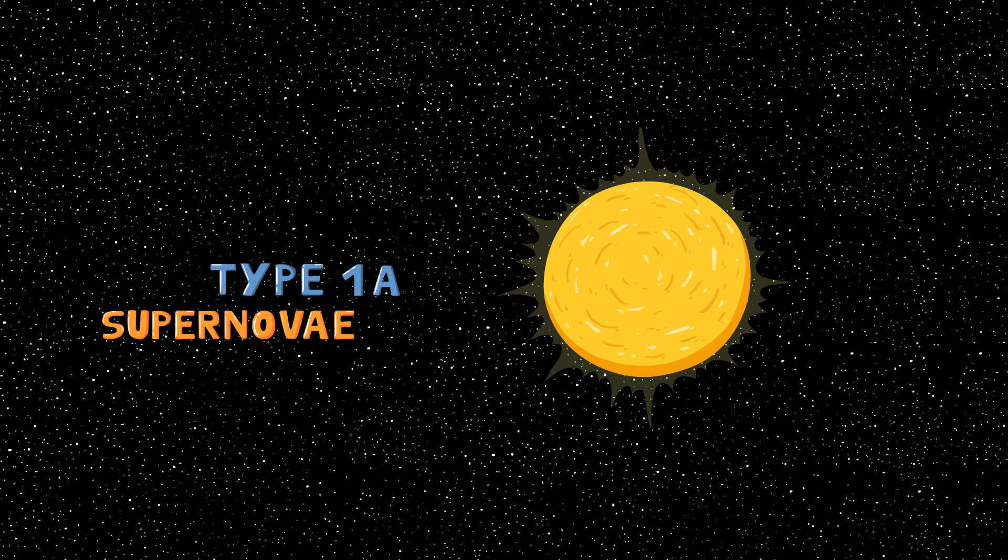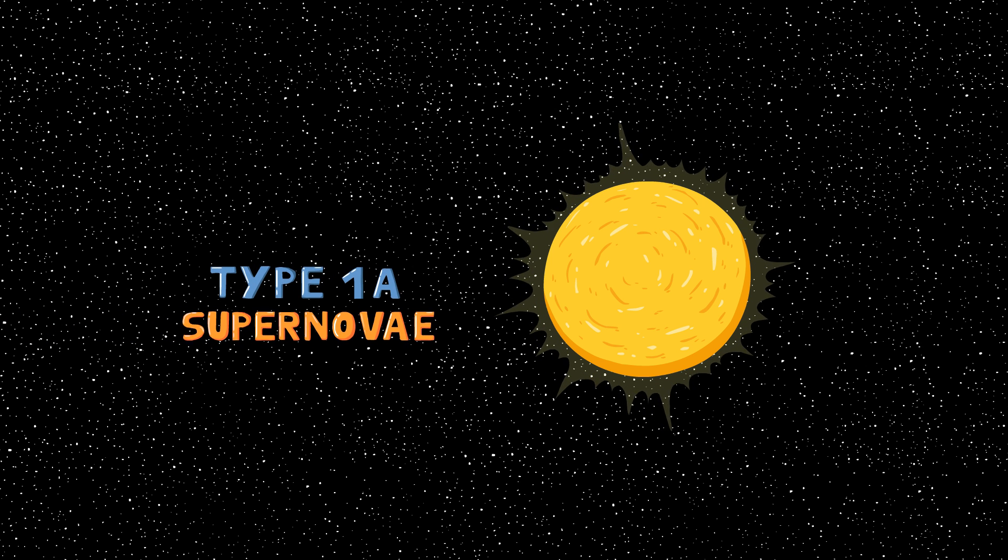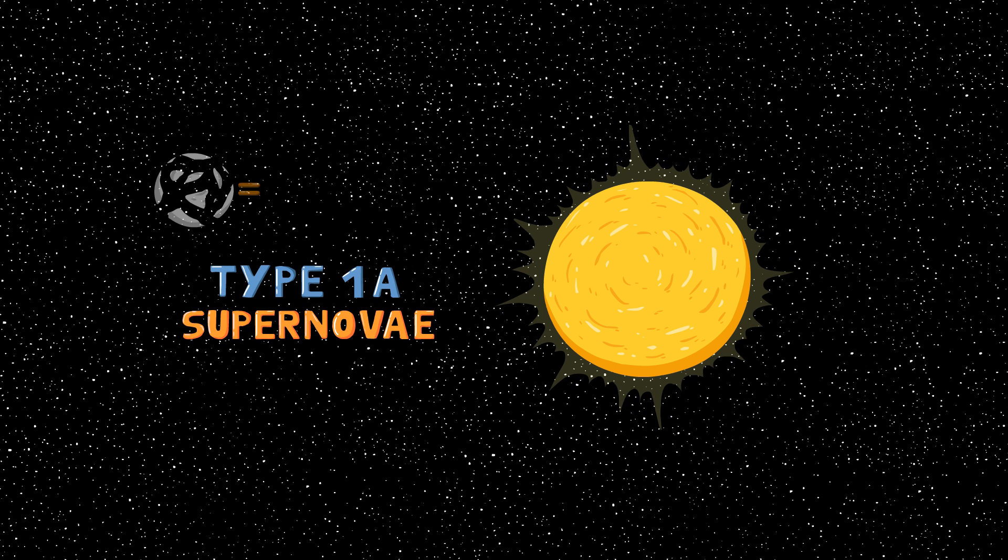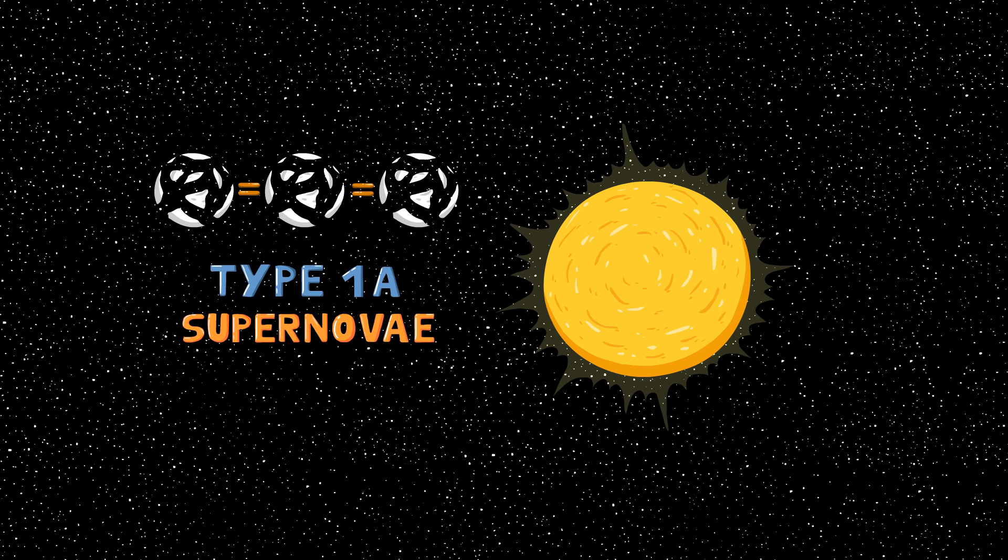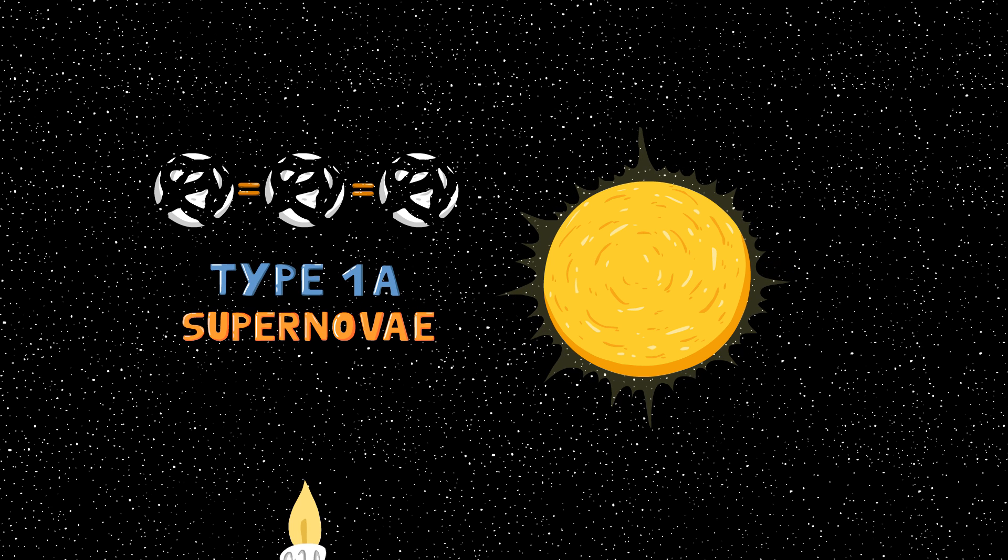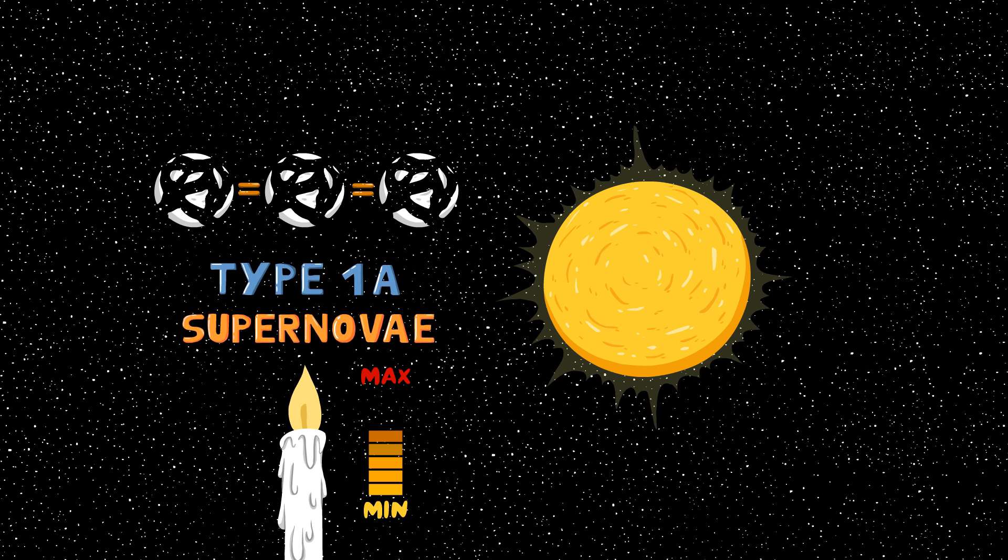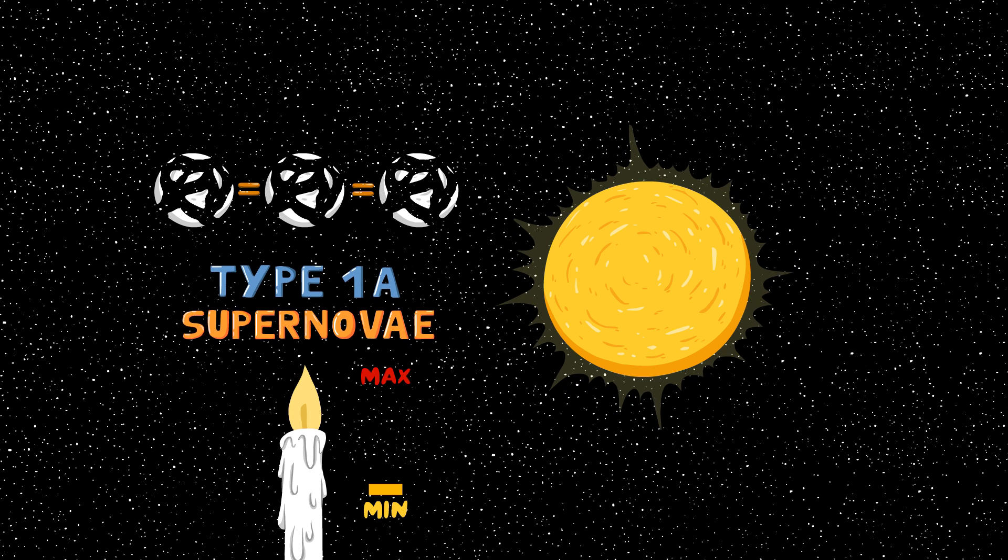These supernovae are super important for understanding the universe. They always release the exact same amount of energy, so we call them a standard candle. If it's close, we receive a ton of energy, and if it's far away, we receive much less. This helps us figure out how close the galaxies are to us.